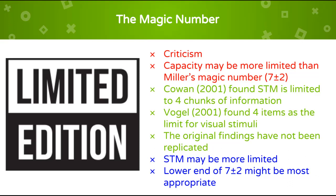Furthermore, Fogul, 2001, found four items as the limit for visual stimuli. This matters because the original findings have not been replicated by subsequent studies, suggesting that short-term memory is more limited than originally thought.